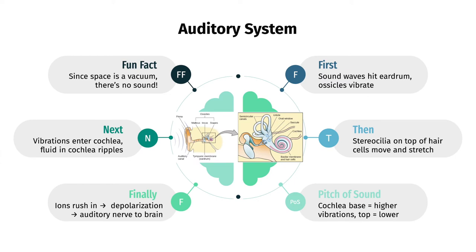Now on to the auditory system, which is known as our hairy sense due to hair-like cilia on top of the auditory receptors. The auditory system senses sound, which is basically vibrations of molecules in the air. Fun fact: the reason you can't hear in space is that space is a vacuum with no molecules, unlike air, which is full of them.